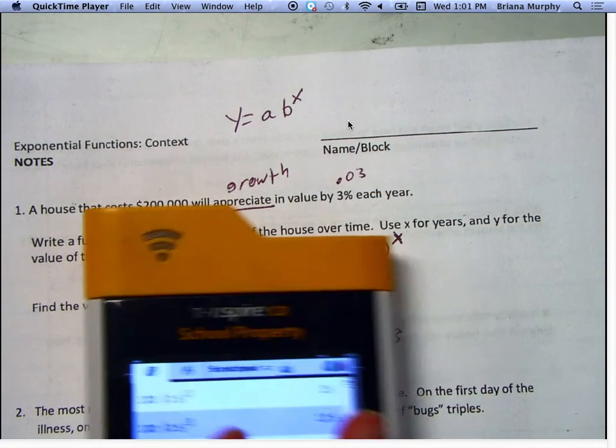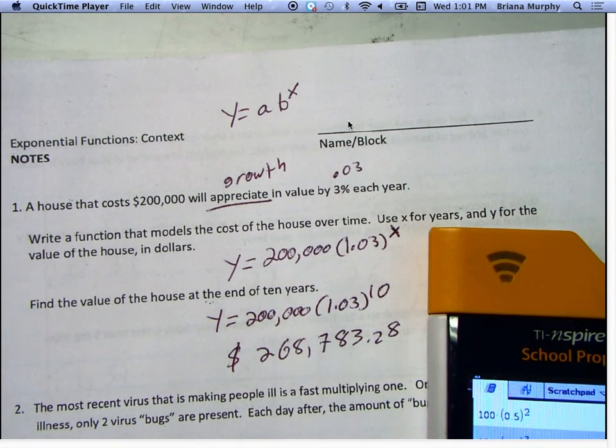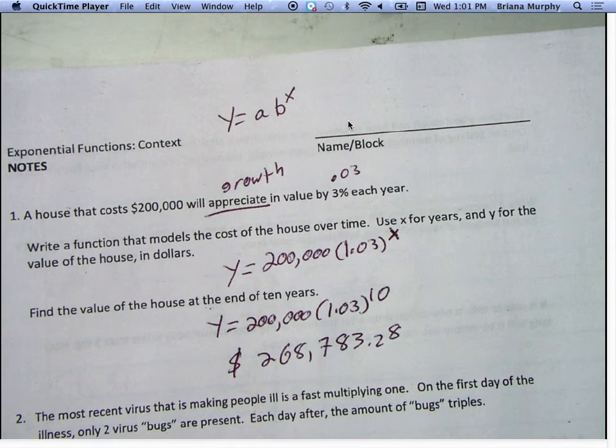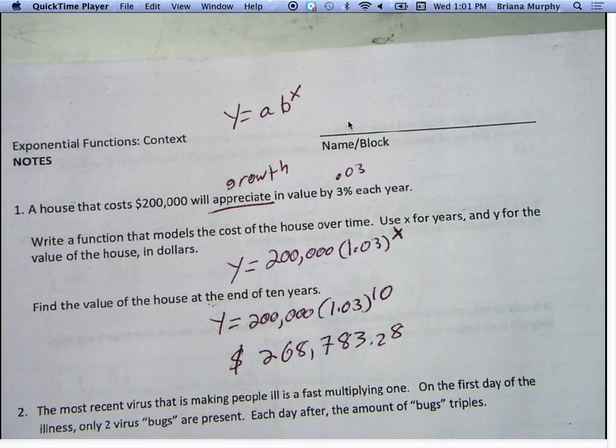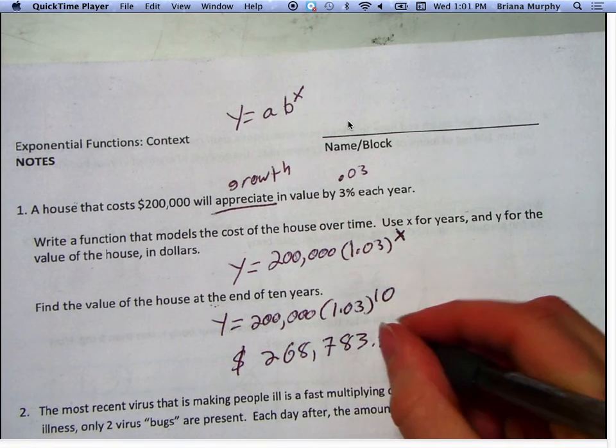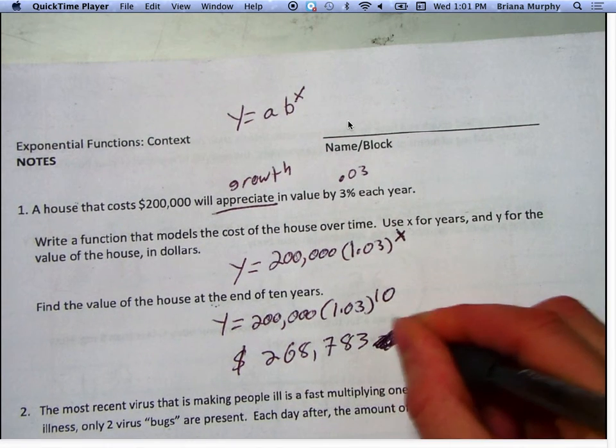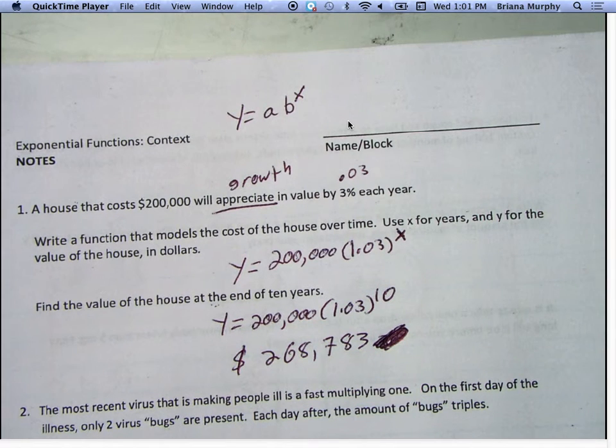Let's try it again then because when I do it, I get 28 cents. So I get 200,000 times 1.03 to the 10th. Nope, I don't get any decimals this time. I feel like it should have decimals. When I did it the first time, I got 28 cents. We'll have to figure out which one's right later.